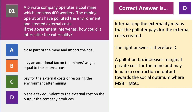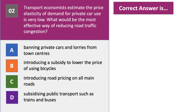Here's question number two. Transport economists estimate the price elasticity of demand for private car use is very low. The question is: what would be the most effective way of reducing traffic congestion? Have a go please at question number two.